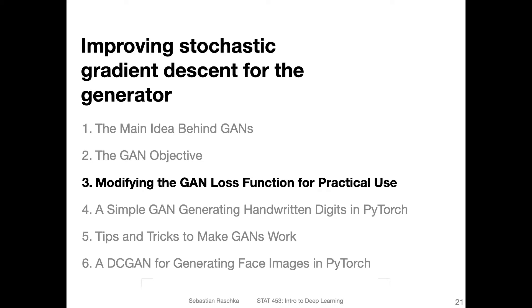In this video, I want to talk about a small modification that we can make to improve GAN training. In particular, we are looking at improving stochastic gradient descent for the generator.